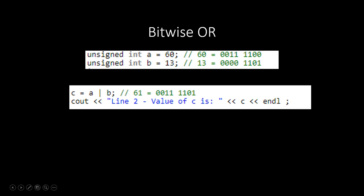Then we have Bitwise OR, still using 60 and 13. The difference between OR and AND is that if a bit is 1 in either number, it's included — so 1 OR 0 still gives 1. This results in the bits 0, 0, 1, 1, 1, 1, 0, 1, bringing us to a total value of 61.